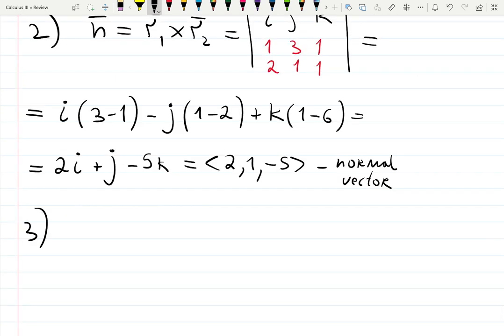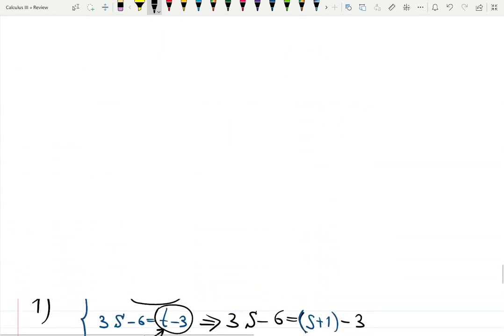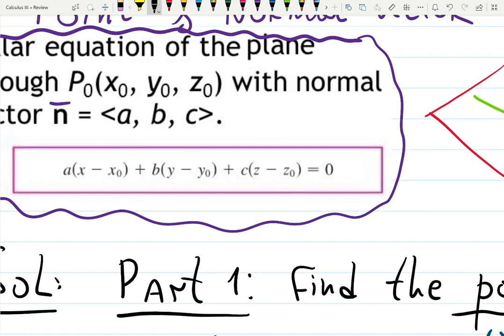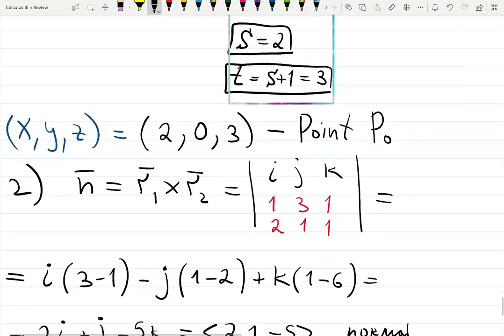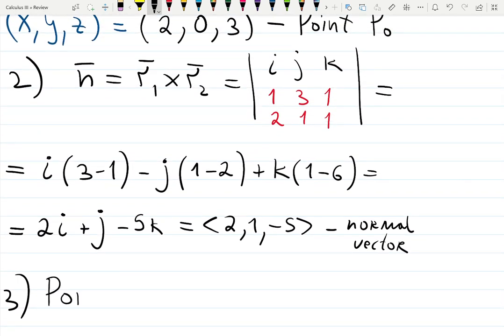So this final step is actually writing down the equation which I have it for you over here. a, those are my pieces from the normal a, b, and c, and x₀, y₀, and z₀ are my components of the point. So let me write it down to have good notes for you. Point P₀ is (2, 0, 3).